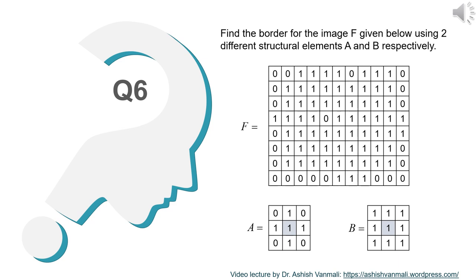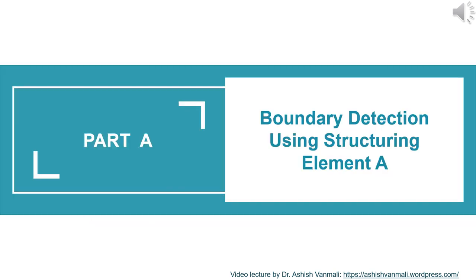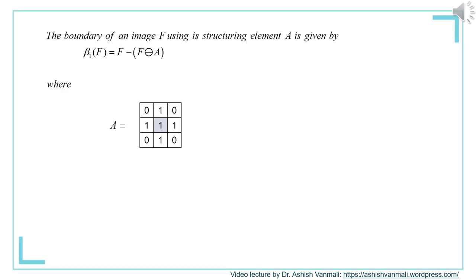The next question is: find the border of image F given below using two different structuring elements A and B respectively. They have given the image F and two different structuring elements. Let's find the boundary of image F using structuring element A, which has the center element 1 and the 4 neighbors also as 1, while the diagonal neighbors of the center are 0.